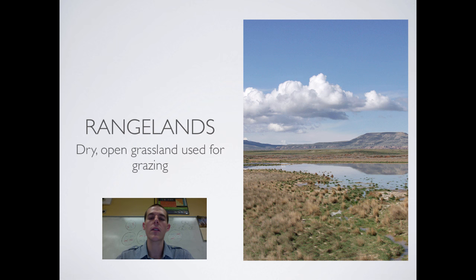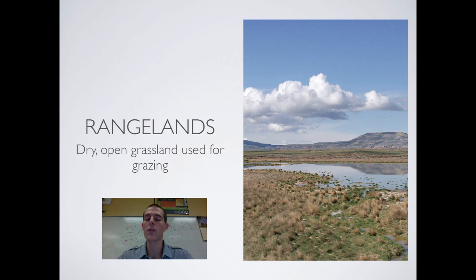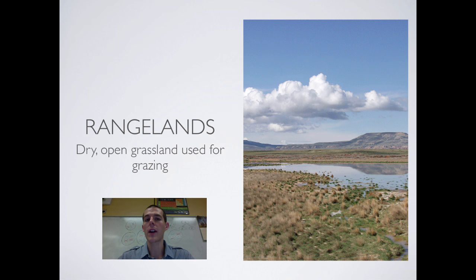The first type of land I want to talk about is rangeland. A large proportion of American land is rangeland. Technically, a rangeland is just dry, open grassland used for grazing. Growing up in Colorado, we had a ton of rangeland — prairie areas that are too dry to grow crops on, but excellent for raising sheep, cattle, goats, and things like that.